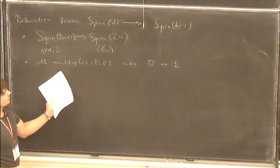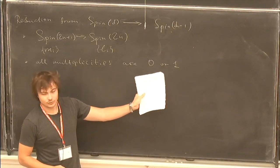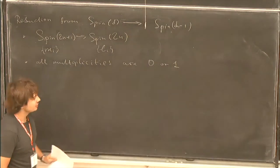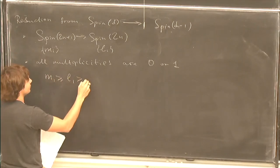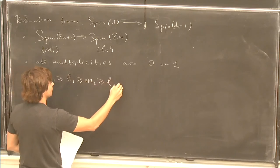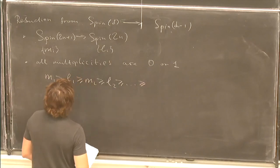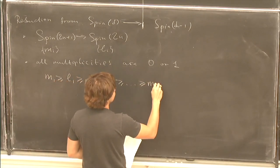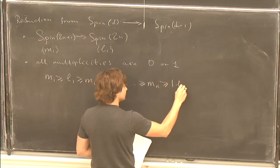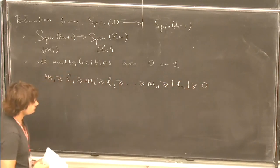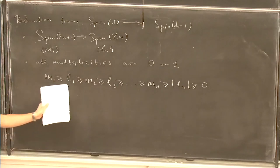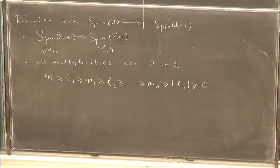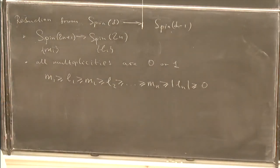All multiplicities are zero or one. The rule for which have multiplicity one: those are the representations which satisfy certain interleaving inequalities. M_i are fixed — this is the representation that we are reducing — and L_i we get to choose. Those which appear do so with multiplicity one.